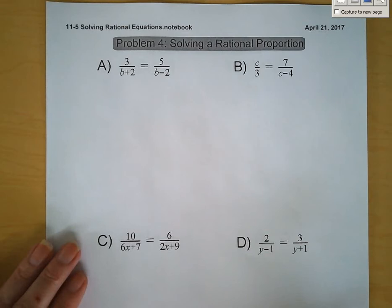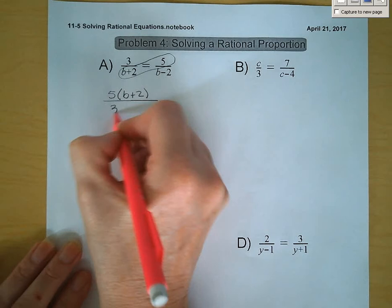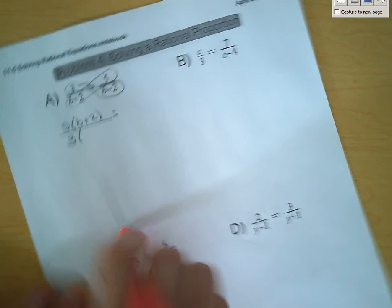Problem 4 is solving a rational proportion. We are going to solve these the same way we did proportions in chapter 2 — we are going to cross multiply. So we have 5 times the quantity b plus 2 is equal to 3 times the quantity b minus 2.